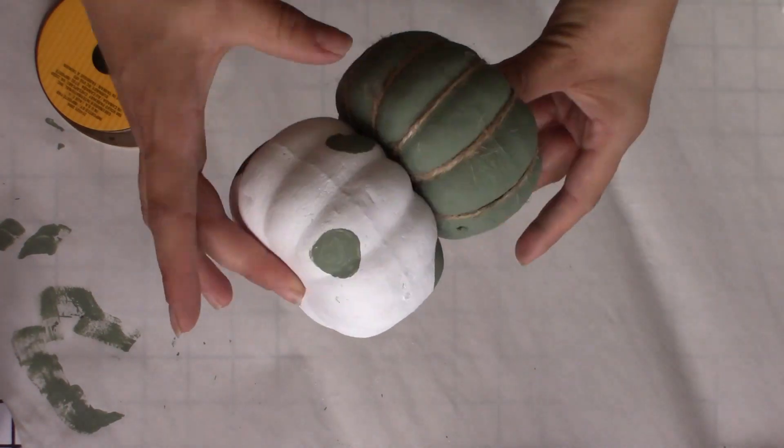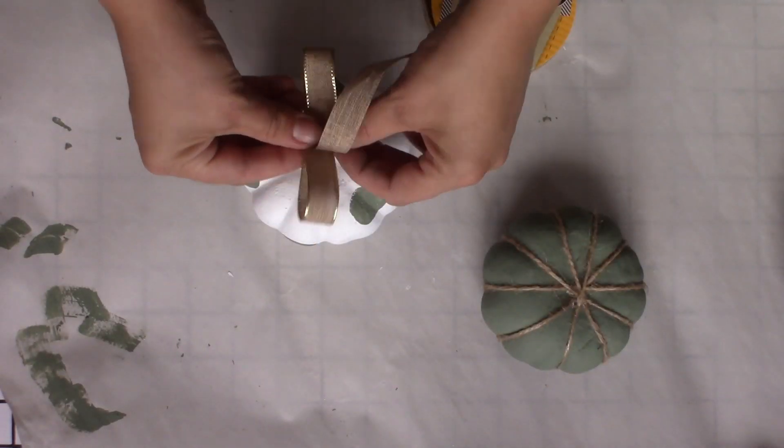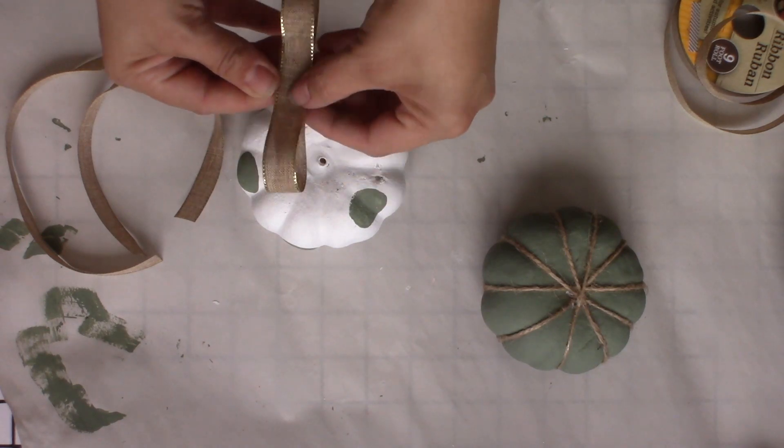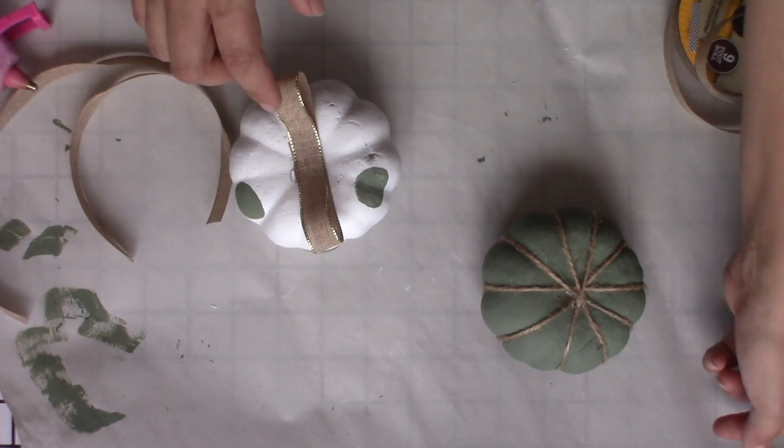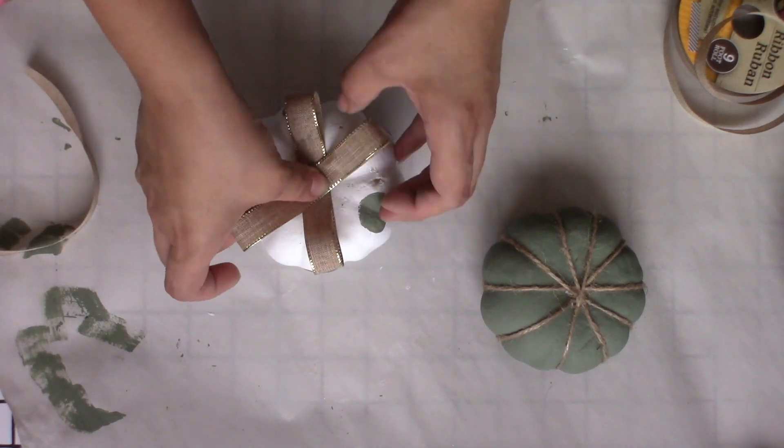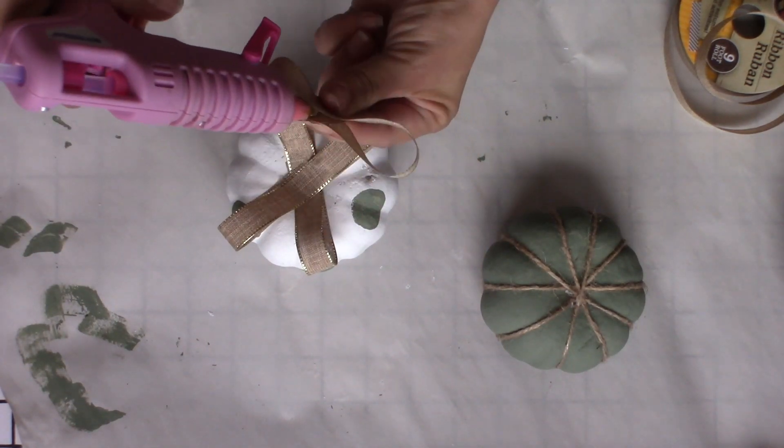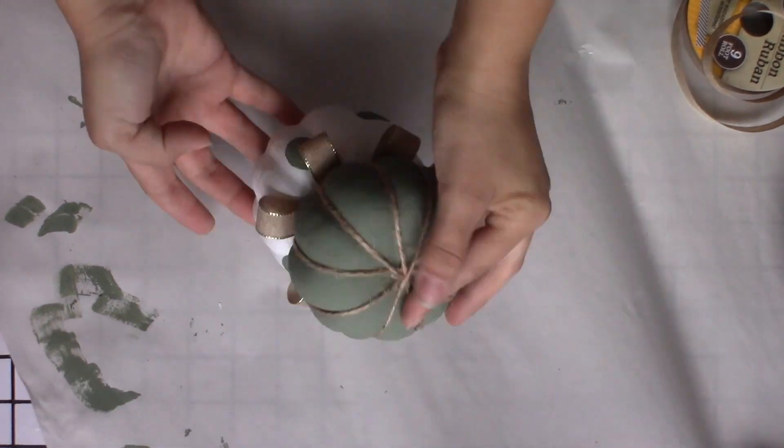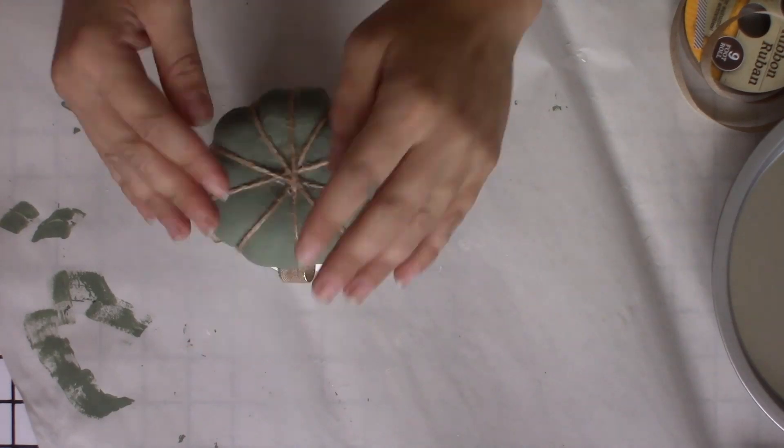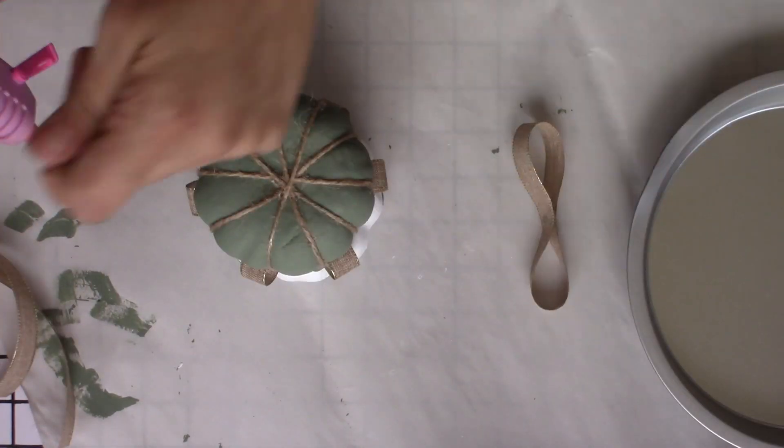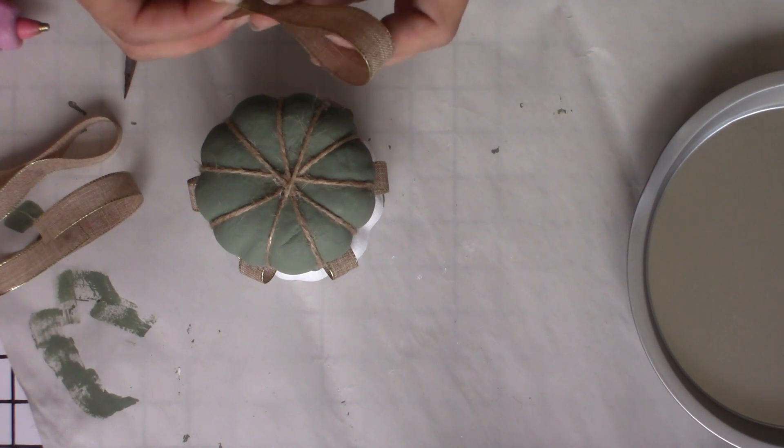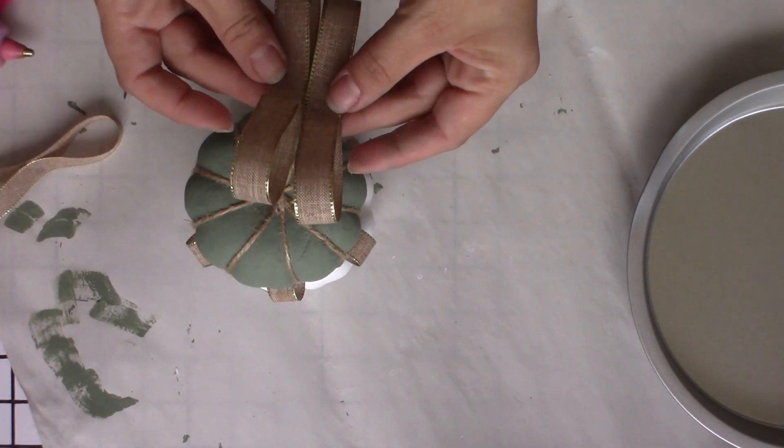Next, I am taking this ribbon from Dollar Tree that's kind of like a burlap with some gold accents on the side. It's super duper cute. All the ribbons they've been coming out with this year have been absolutely adorable. I am using this to kind of give the pumpkins a little more something. These are going to mimic where the leaves would normally go. I'm going to do this to both pumpkins.